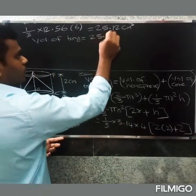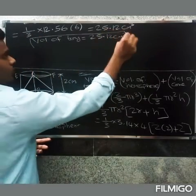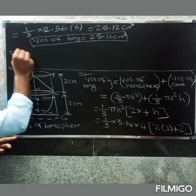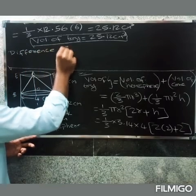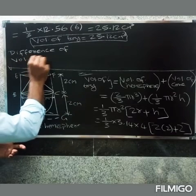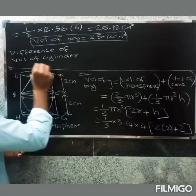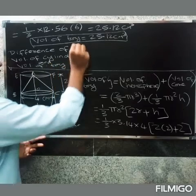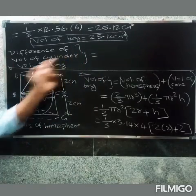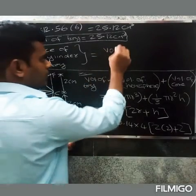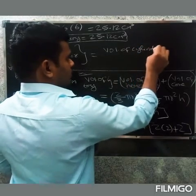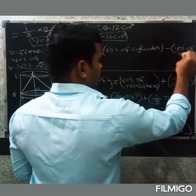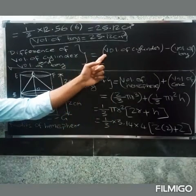So the volume of the tie equals 25.12 cm³. Next, we find the difference of volume of cylinder and volume of tie. Volume of tie = 25.12 cm³. Now, volume of cylinder using formula π r² h.